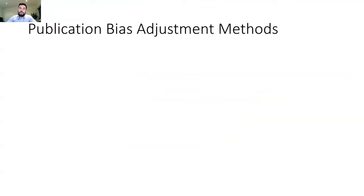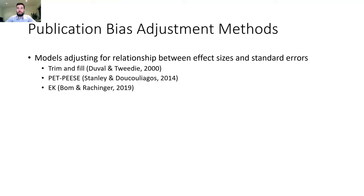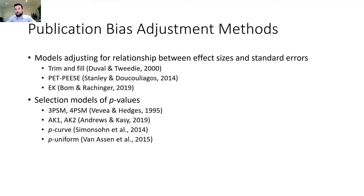Publication bias adjustment is a topic that has been around for many decades, and different methods have been developed. I like to differentiate two camps. One camp consists of methods that adjust for the relationship between standard errors and effect sizes — for example, trim-and-fill, PET-PEESE, or endogenous kink. The second group are selection models of p-values that try to adjust for publication bias operating on p-values — for example, 3PSM and 4PSM, AK2, PEAK, or p-uniform.